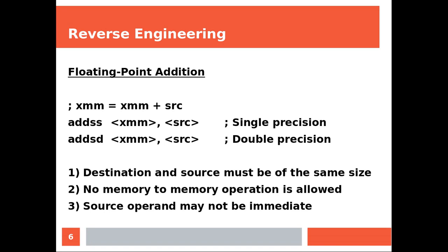Floating point addition: source plus XMM, with the result going into the XMM register. You're going to be using different instructions according to the precision. Destination and source must be of the same size. No memory-to-memory operation is allowed — again, you need two instructions. The source operand may not be immediate.